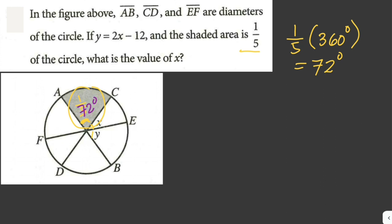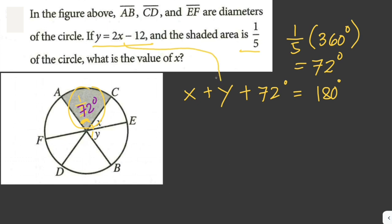Now we can add them up and equate to 180 degrees. So that would be x plus y plus 72 equals 180 degrees. And it's given here that y is equal to 2x minus 12, then we can just substitute that value. So we have x plus 2x minus 12 plus 72 equals 180.